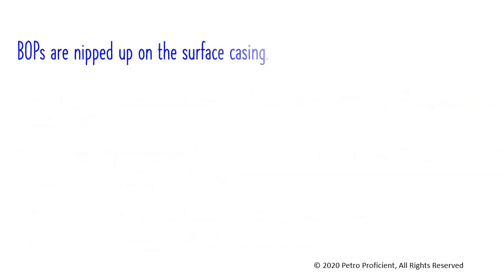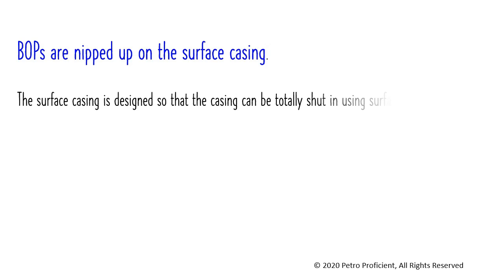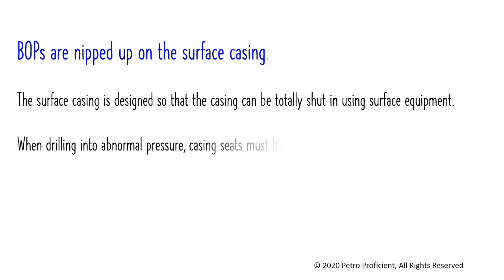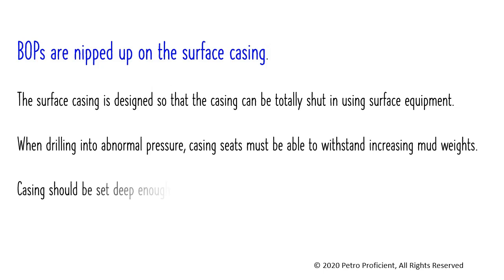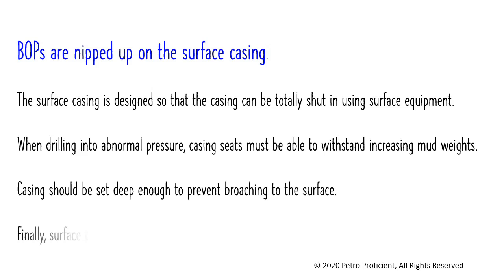BOPs are installed on the surface casing. The surface casing is designed so that the casing can be totally shut in using surface equipment when drilling into abnormal pressure. Casing seats must be able to withstand increasing mud weights, and casing should be set deep enough to prevent broaching to the surface. Surface casing also supports all casing strings run in the well subsequently.